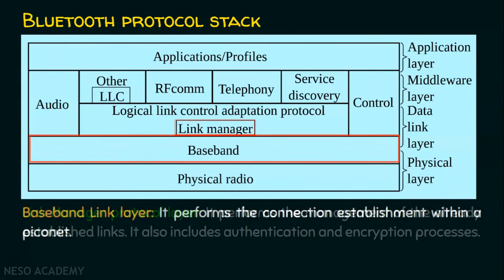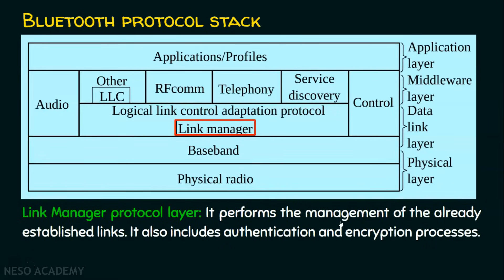The next layer is the link manager. This link manager protocol layer performs the management of already established links. If a connection is already established between two nodes, the management of these established links is handled by the link manager layer. This layer also concentrates on security services, including authentication and encryption. Authentication means ensuring that the right entity is involved in the transactions, and encryption means that if one Bluetooth device sends data to another, no other nodes can see what is being transmitted — only the sender and receiver know the actual data.